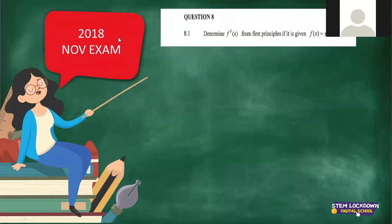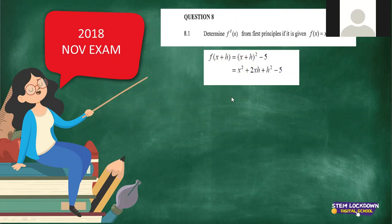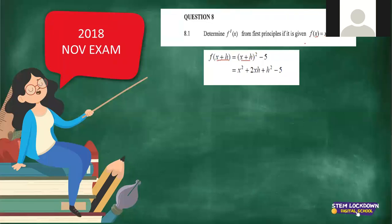Now we're doing a question from the 2018 November exam - still almost similar to the other one. We still have to find the derivative from first principles, same procedure. F prime means derivative. Even if they don't mention it, you know you need to find the derivative from first principles, so you know you have to have a limit. If we're given a function that doesn't have x, then we don't plug in x plus h - our f of x will be the same as f of x plus h.